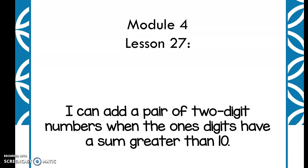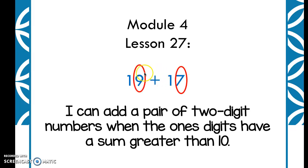Hello friends! Well aren't you smarty pants making it all the way to module 4 lesson 27. Today's learning goal is: I can add a pair of two-digit numbers when the ones digits have a sum greater than 10. We're just going to be putting all those great skills we've been learning to practice one more time — adding two two-digit numbers when the ones digits equal a sum of more than 10.